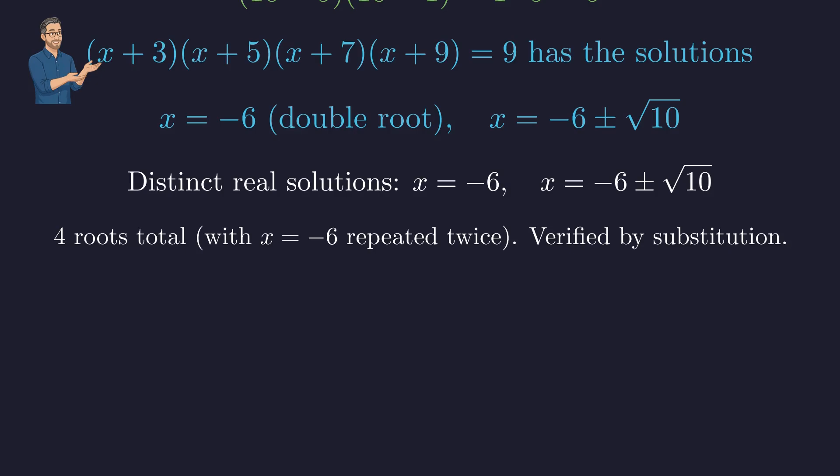Counting multiplicity, 4 roots total, with x = -6 repeated twice. All solutions verified by substitution.